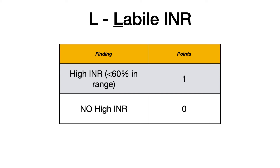L stands for labile INR. A labile or high INR increases the risk of bleeding. If the INR is high or if the patient is less than 60% time in range, that is worth one point. If they have no high INR — meaning it's normal or they're in range an appropriate amount of time — that is worth zero points.